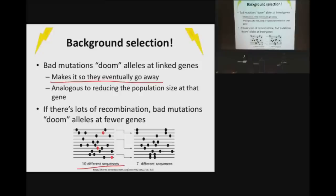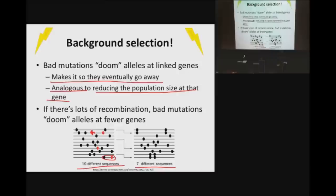So you start off with ten different sequences and end up with seven — analogous to reducing the population size at that gene. It's almost like there are fewer overall individuals contributing to later generations. This affects totally linked genes. If you have recombination between the bad mutation and nearby neutral ones, those neutral ones can recombine away and persist. So with low recombination, these mutations eliminate a lot of variation. With high recombination, you just lose the bad mutation and not much else.